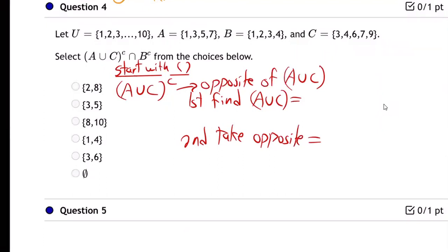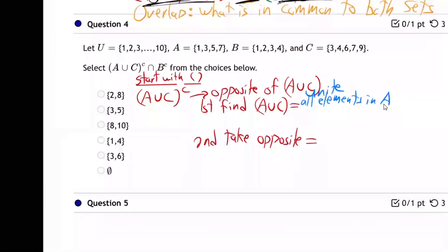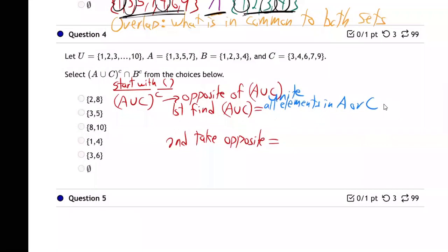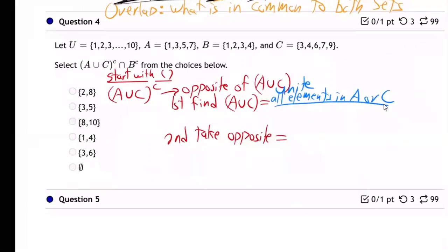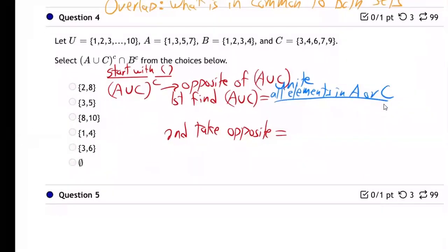So let's first find A union C. So that means all elements in A, or I should say unite. Unite all elements in A or C, right? Unite all elements in A or C. Let's take all of A and all C. Unite them.